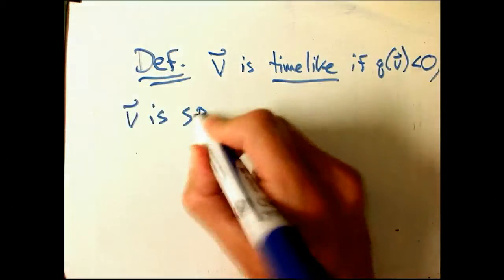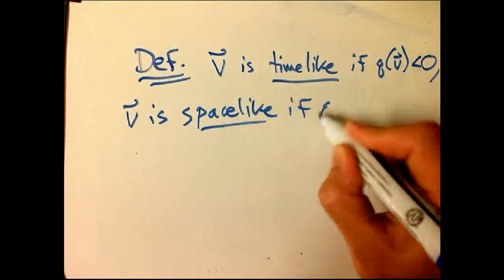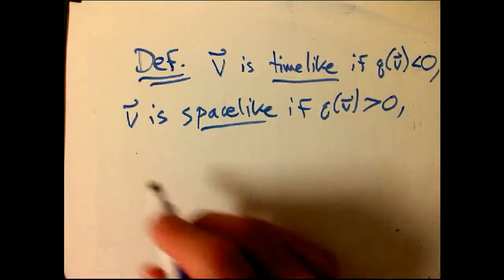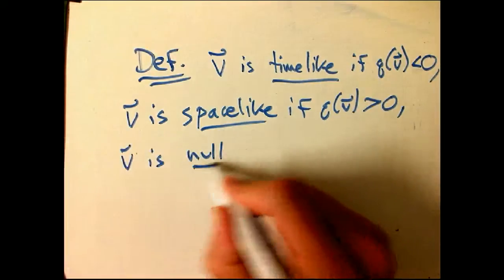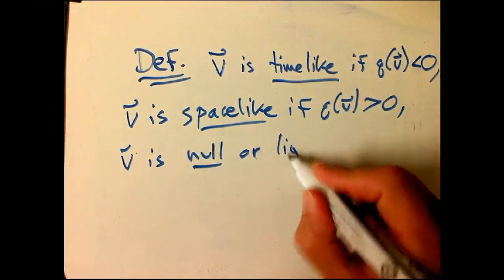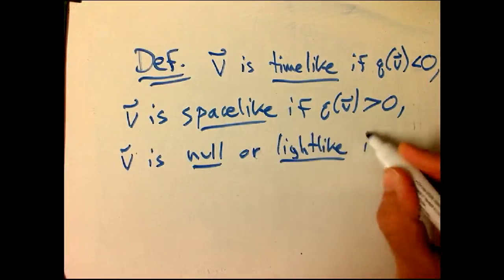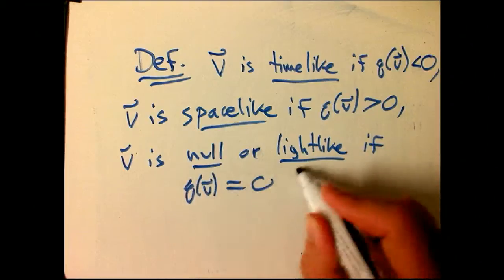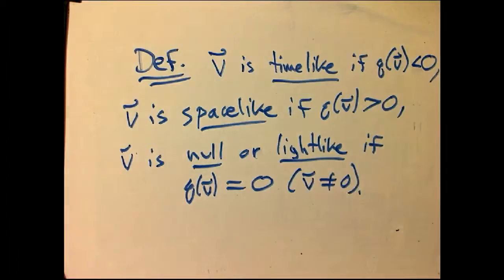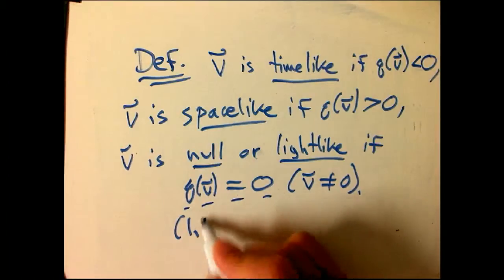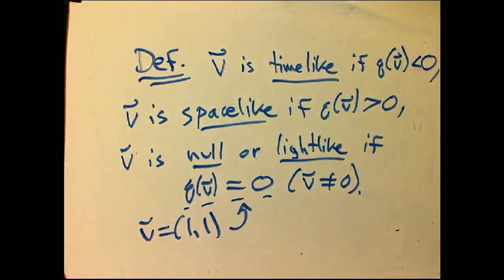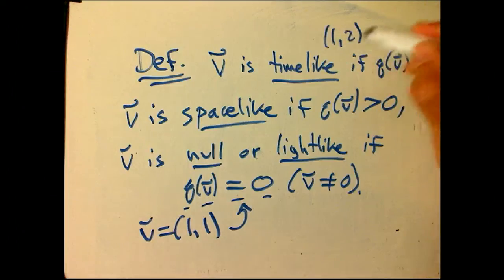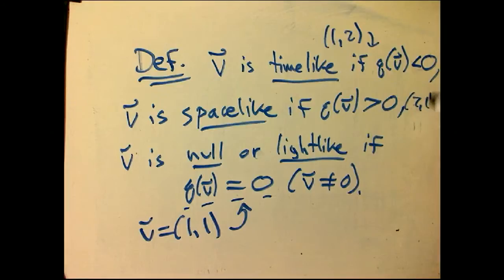V is called spacelike if q of v is positive. And v is null or, to be using an even more suggestive word, lightlike if q of v is equal to zero, and usually we say the vector v not equal to zero. We saw that (1,1) is an example of a null vector. And up here, (1,2) was an example of a timelike vector. Not hard to see that (2,1) is going to be an example of a spacelike vector.